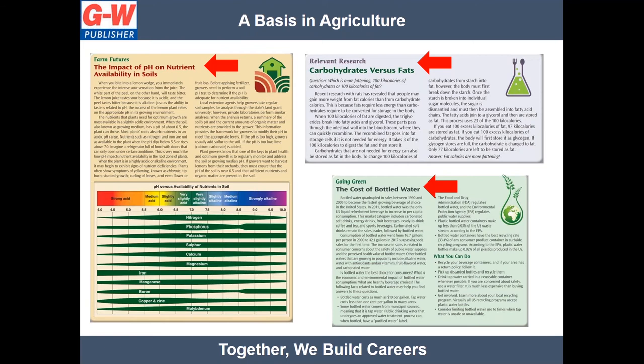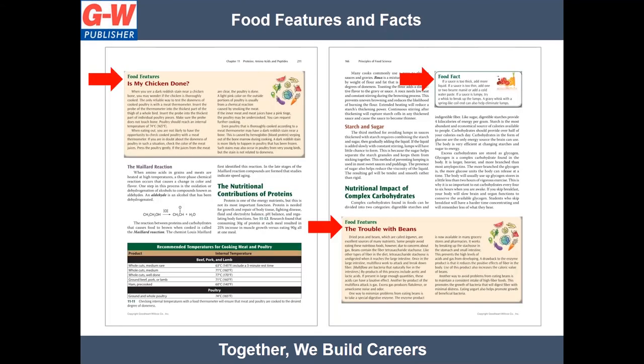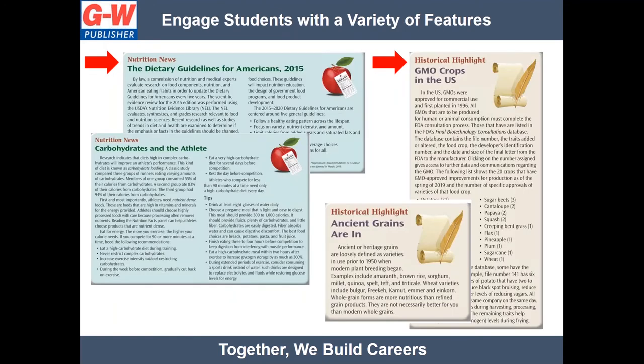Farm Futures emphasizes the connection of food science to agriculture. Relevant Research discusses current research on recent findings that relate to chapter content. Going Green raises awareness about food science issues related to the environment. Food Features offers interesting information about the preparation and consumption of popular food products. Food Facts tie chapter concepts to basic food preparation, storage, skills, and safety considerations. Nutrition News relates up-to-date information on nutrition to chapter content. Historical Highlights gives insight into important food discoveries and the scientific understanding of food.